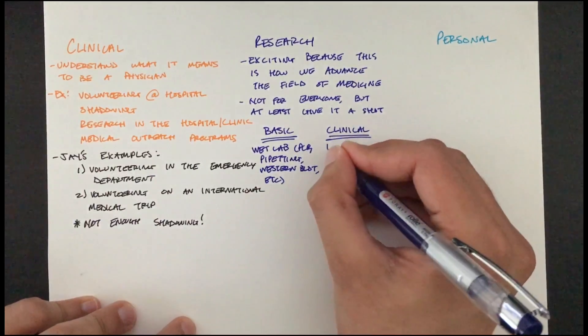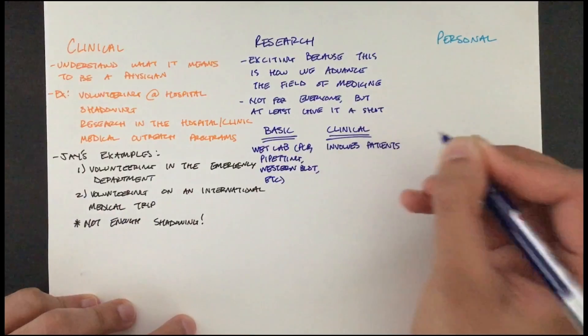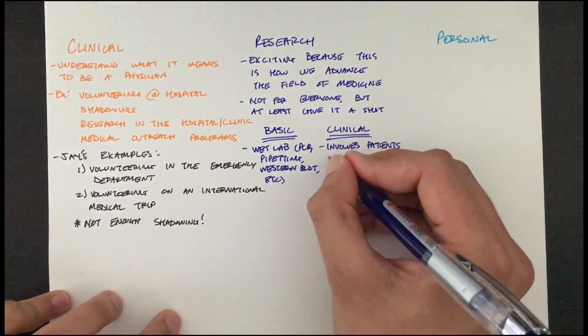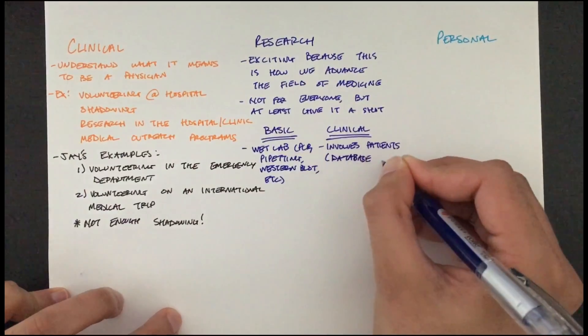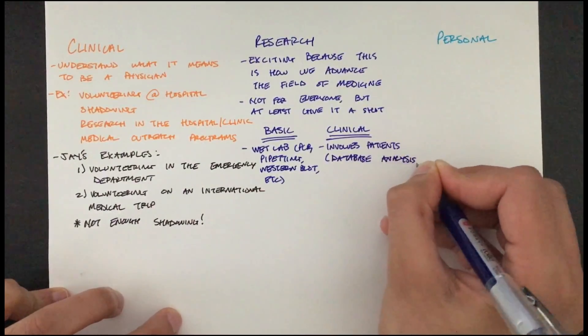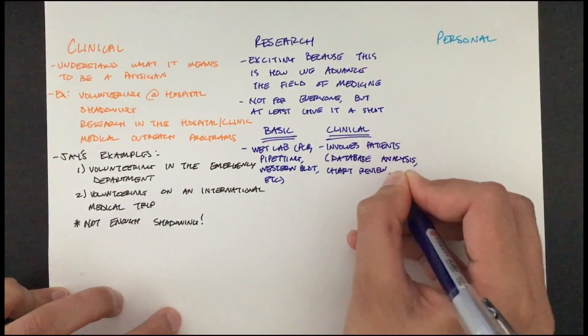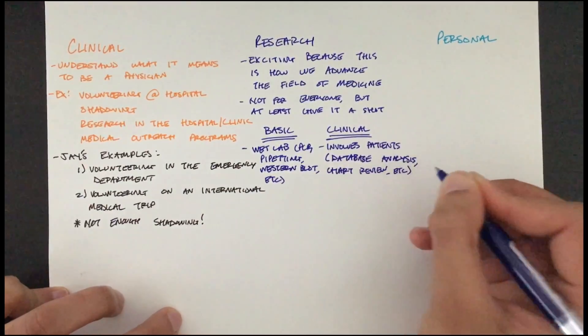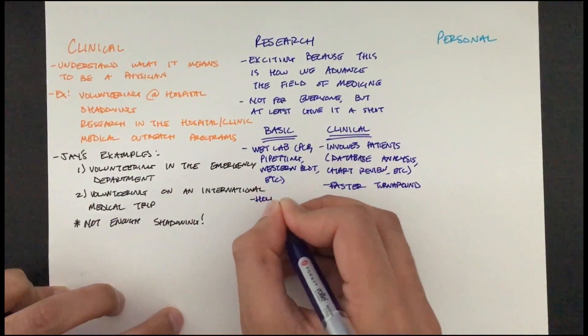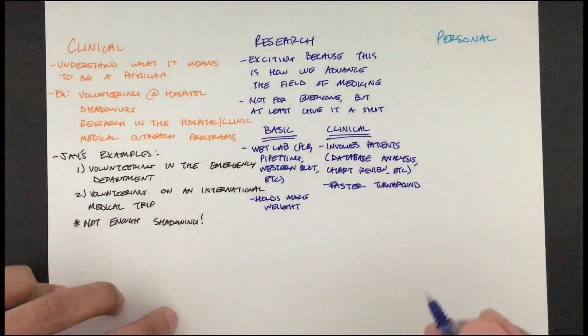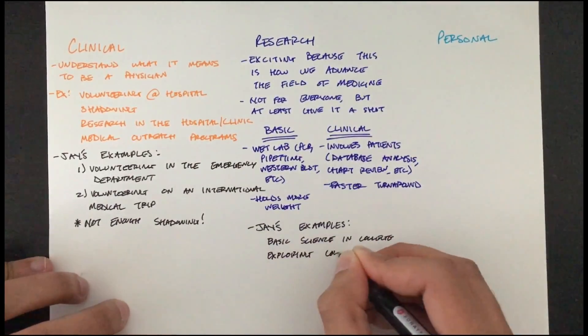In medical school, I fortunately got involved with clinical research, which is a much better fit for me, and I actually grew to enjoy it as I got better at it. Clinical research is not done at a bench in a lab, but rather involves patients, either direct interaction, database analysis, chart review, etc. Clinical research is also better suited for those who are impatient because it has a faster turnaround time, but it is also generally considered to have less weight than basic science research.